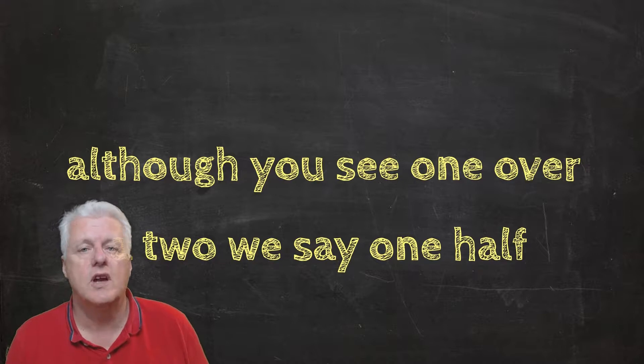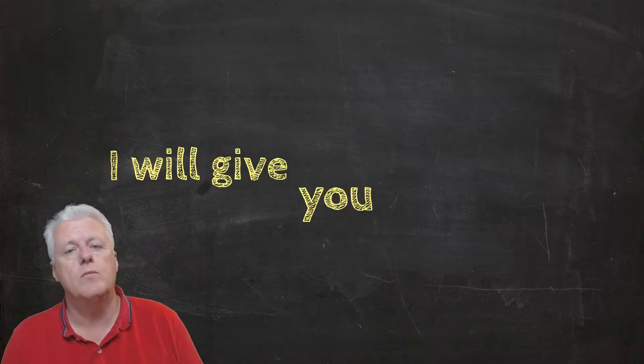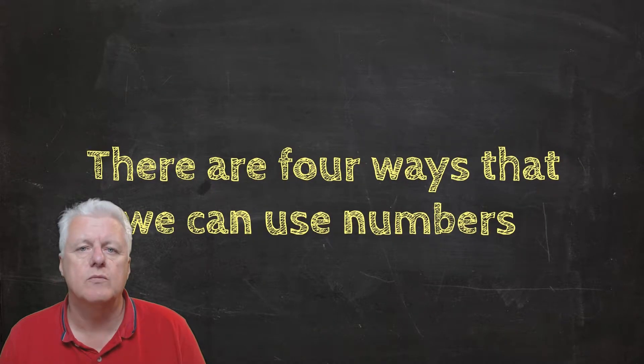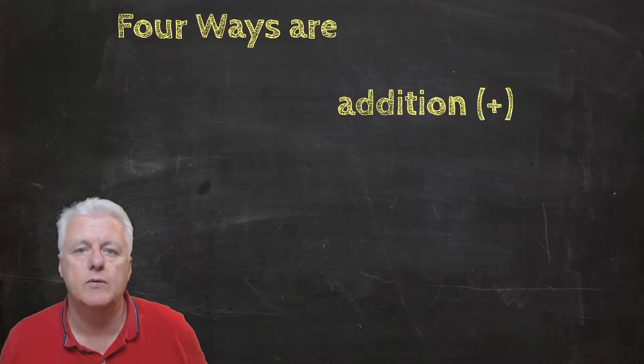There are four ways that we can use numbers in English, and the four ways are addition and there's a symbol for addition, subtraction with a symbol for subtraction, and multiplication.